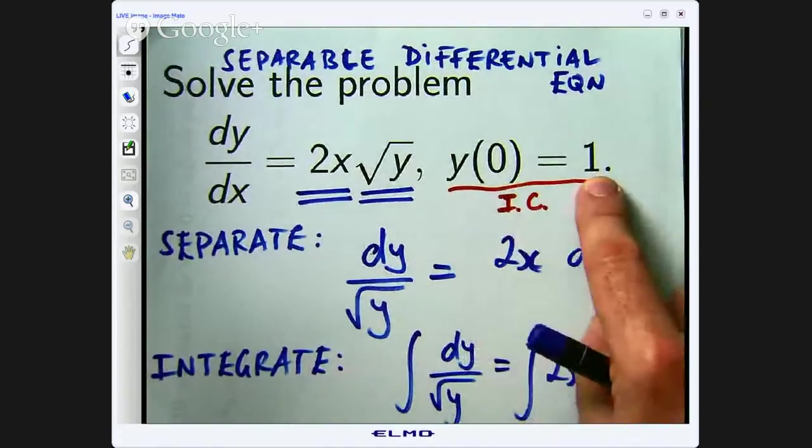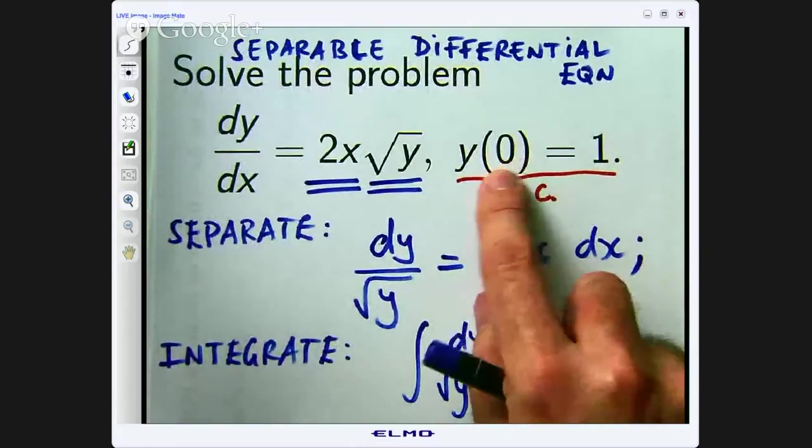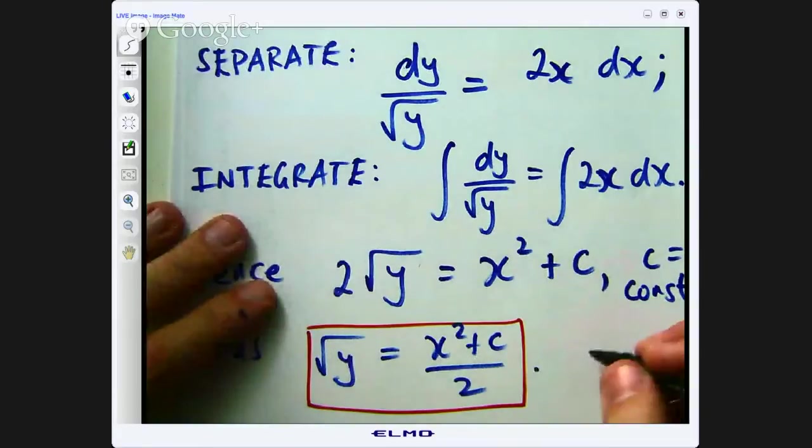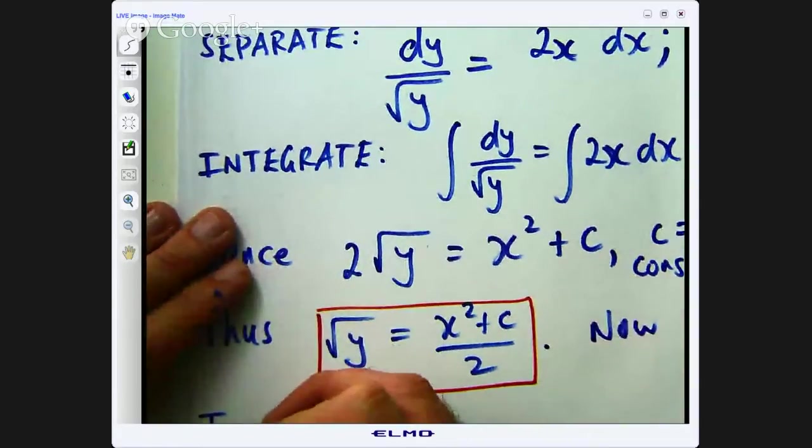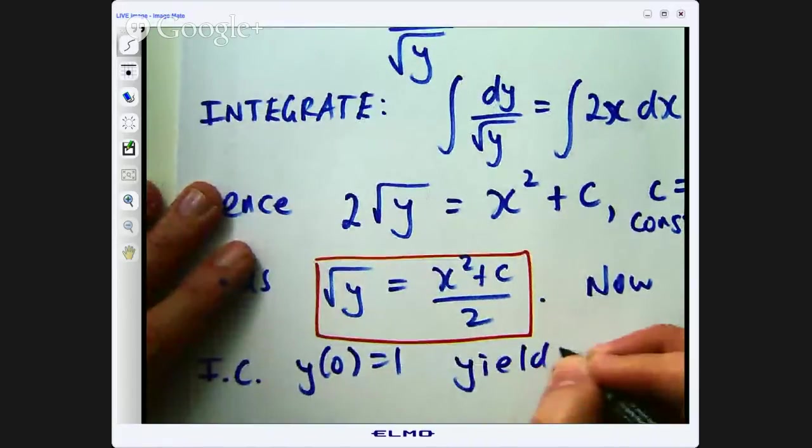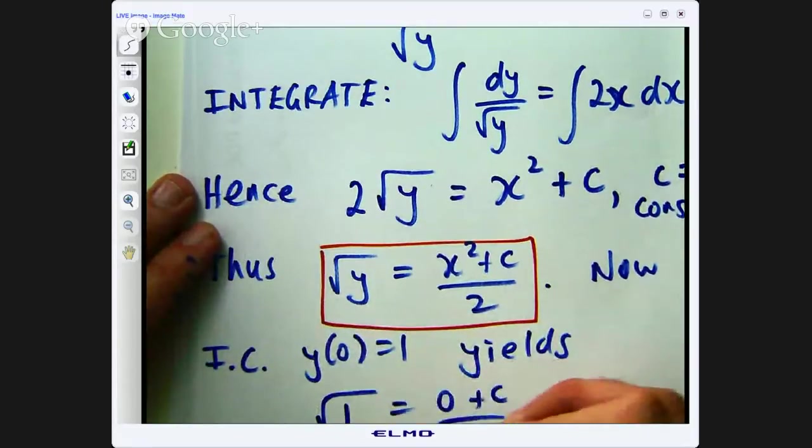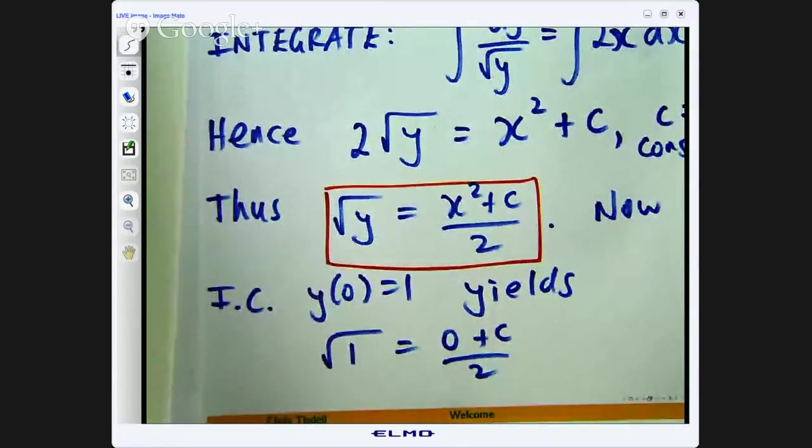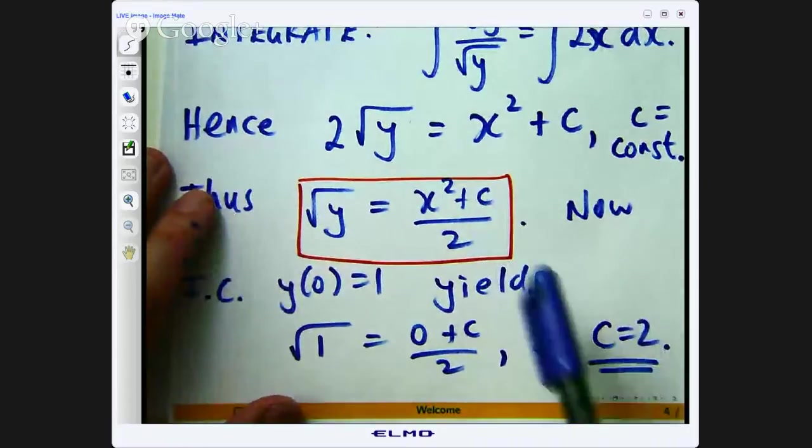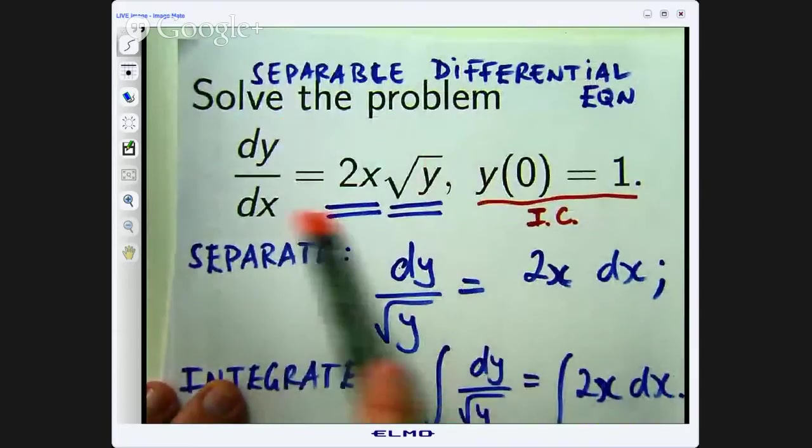Okay, so let us try to get the value of c down here by putting in this information. So when x equals 0 I know y equals 1 so I can replace y with 1 there and x with 0 there and I can get c. So now initial condition y of 0 equals 1 yields the following. So what I can do now is go back up to here replace c with 2 and I have got what is called a particular solution to my problem. So basically a solution that satisfies both the differential equation and the initial condition.